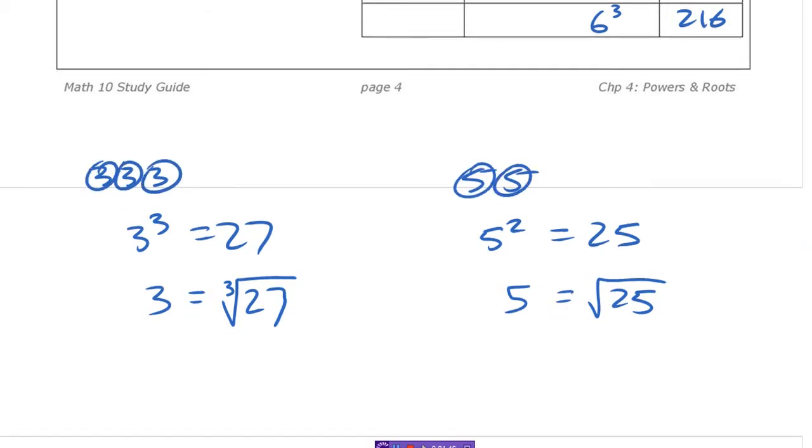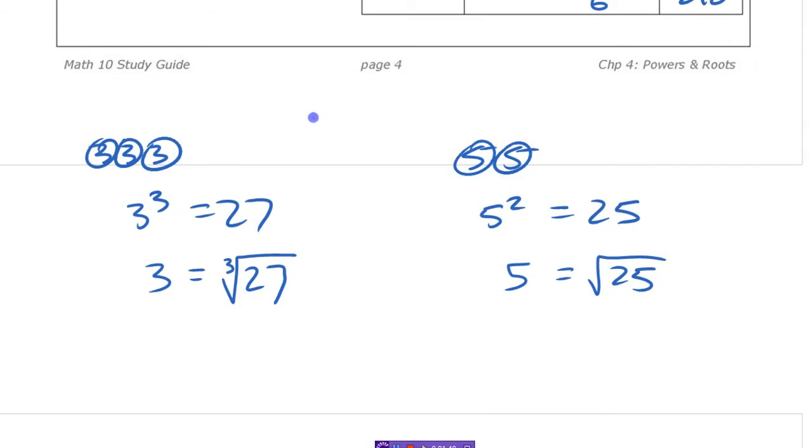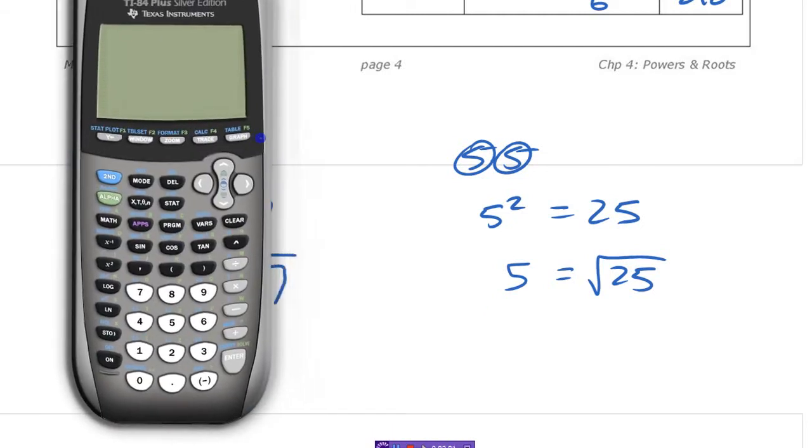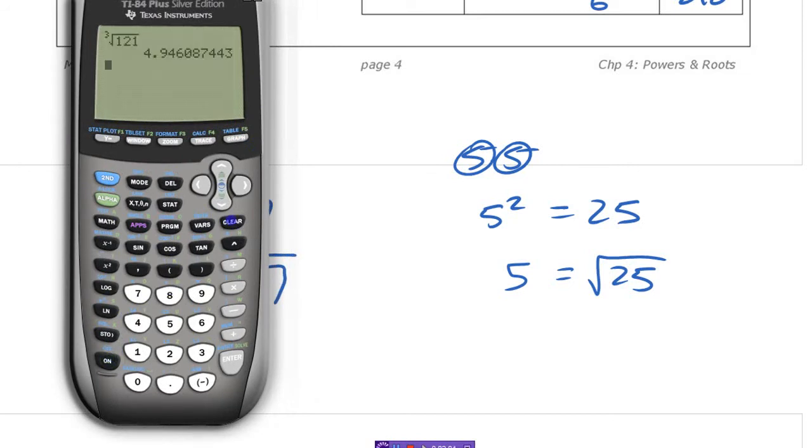You can talk about fourth roots and fifth roots and stuff. I don't know if you have a button for all of those in your calculator, but you will have a cube root button somewhere in your calculator. On these TI calculators, it's under this menu here, math. If you know that 2 cubed is 8, then if you do the cube root, which is this thing right here.